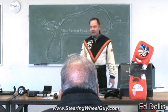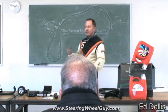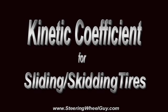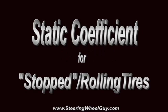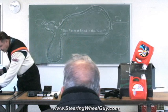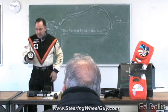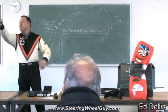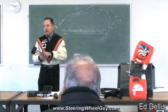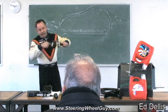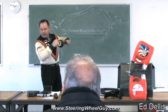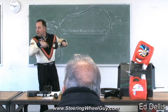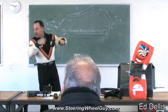Once a tire starts to slide, you go into what they call the kinetic coefficient of friction — the sliding coefficient of friction — which is roughly 30% less than the static. This thing is spinning and spinning and spinning; you're doing 120 miles an hour down the track. It's spinning so fast — 28 times a second — that contact patch is hitting the ground.